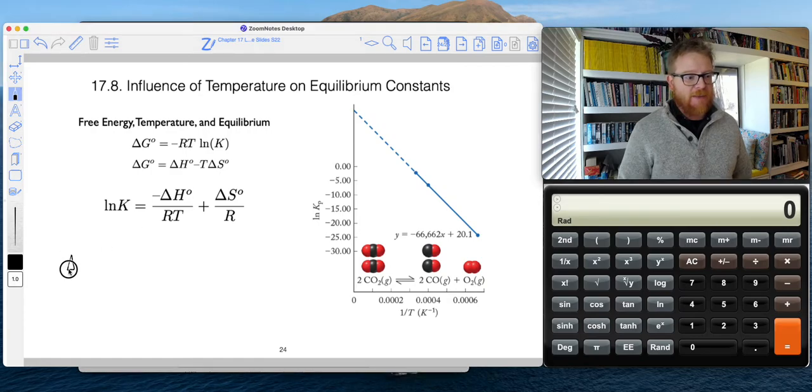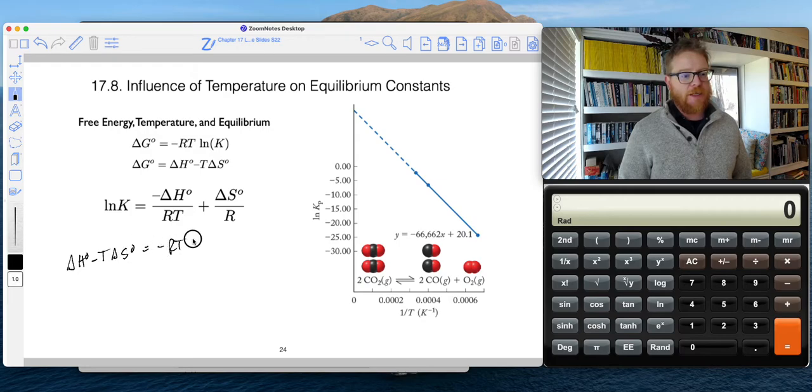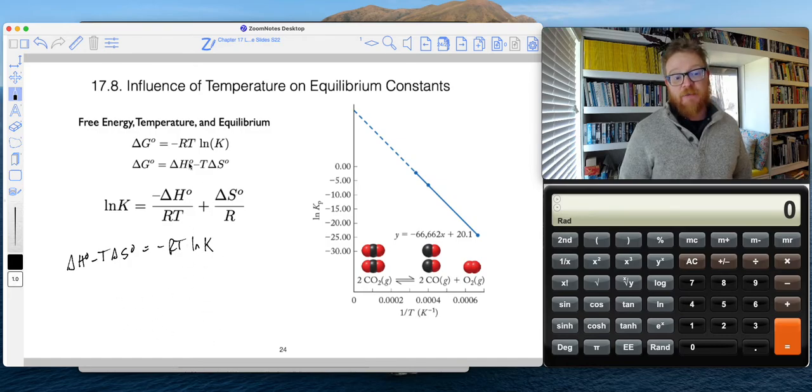So I can set these two things equal to each other. Equals negative RT natural log of K. And if I divide both sides by RT, by negative RT, then this equation manifests. Divide by negative RT, divide by negative RT.